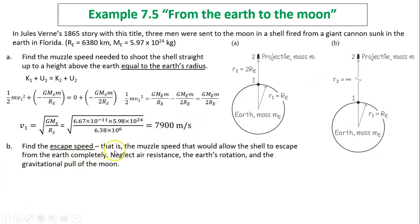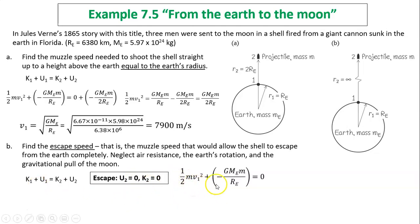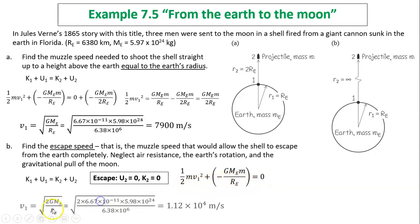The next question is to find escape speed — the muzzle speed that would allow the shell to escape from Earth completely, neglecting air resistance, Earth's rotation, and the gravitational pull of the Moon. To escape means reaching infinity, so U2 equals zero and K2 also equals zero. That means the initial kinetic energy plus the potential energy must equal zero. From here we find the expression for escape speed. Substituting all numbers gives the escape speed, which is much higher than shooting to just two radii above Earth's surface.